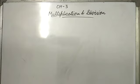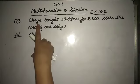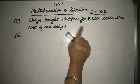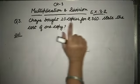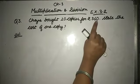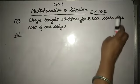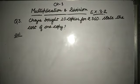Okay, today we will take few word problems. Let's start now. Question number 3: Chaya bought 20 copies for Rs.360. State the cost of one copy.